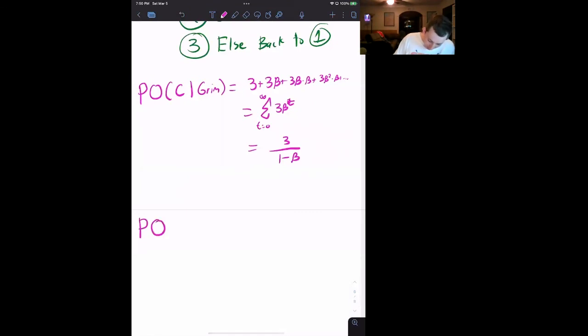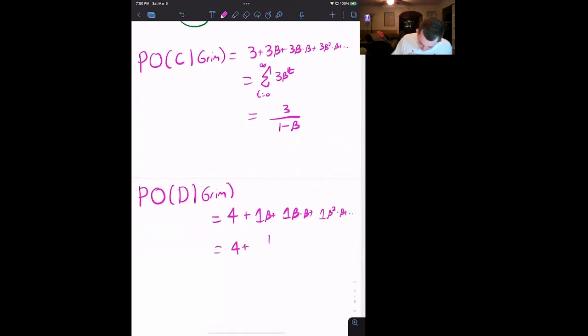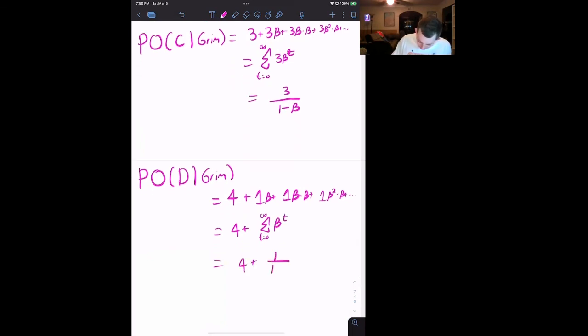Now, what happens if instead I play defect? So defect playing Grim. Well, I get four because my partner cooperated and I defected. So I get four, but then my partner is going to play defect forever and ever. And so my best hope is also to play defect forever. I'm going to get one times beta plus one beta times beta plus one beta squared times beta, dot dot dot, which is four plus the sum from t equals zero to infinity of beta to the t, which is just four plus one over one minus beta.